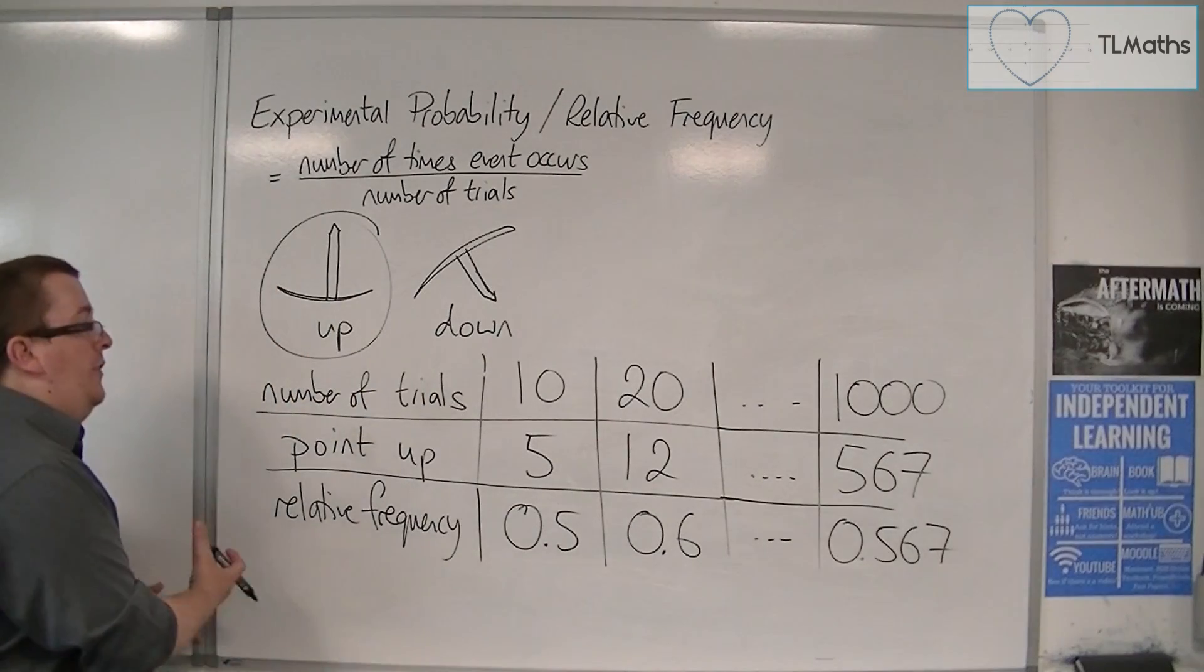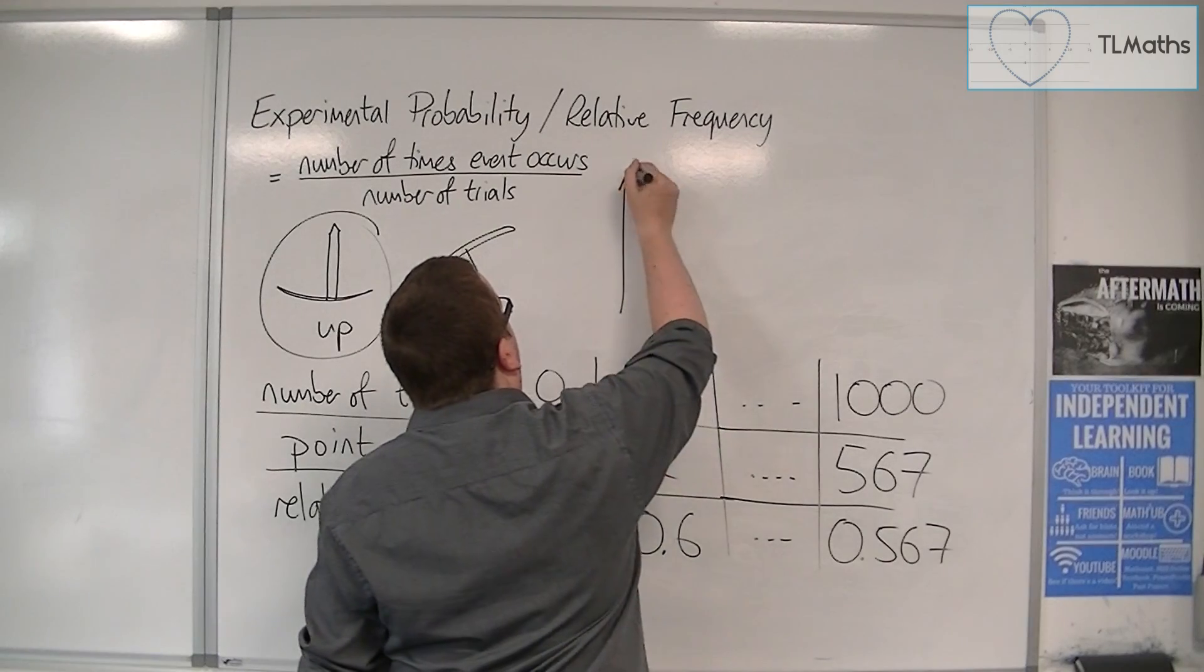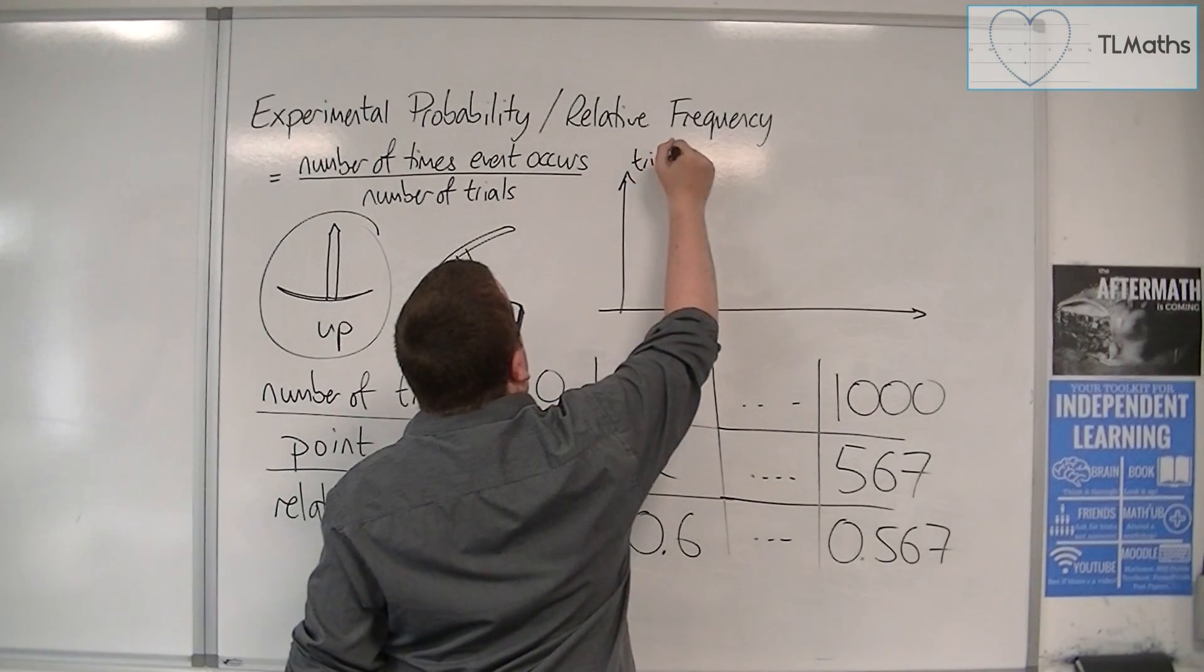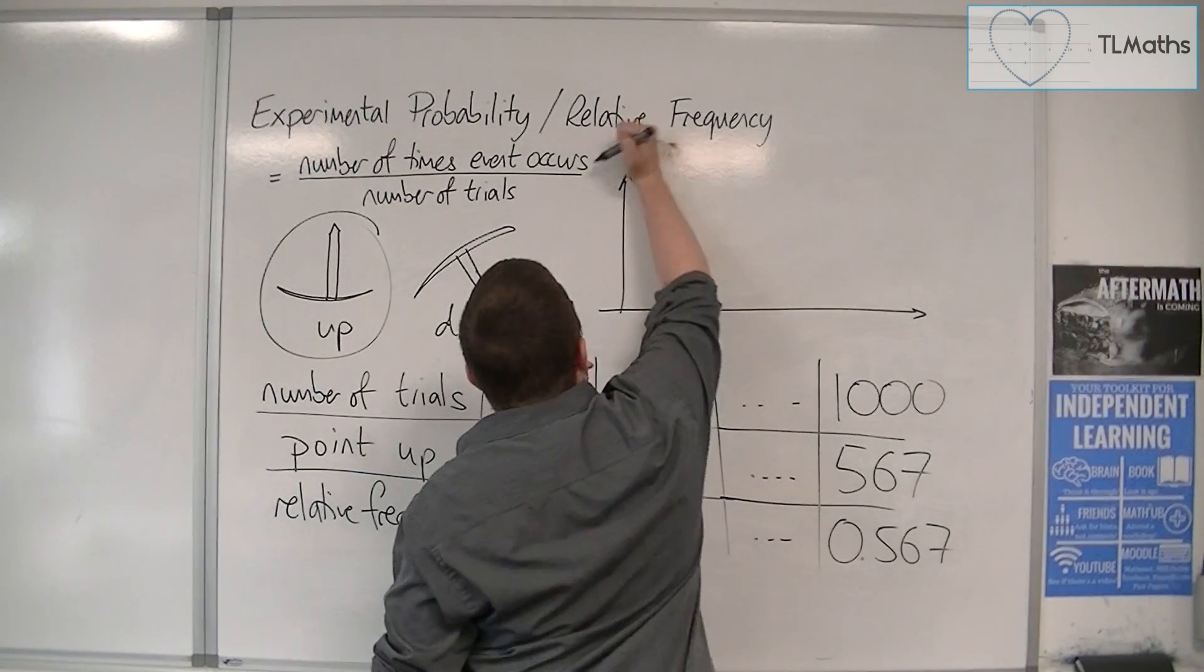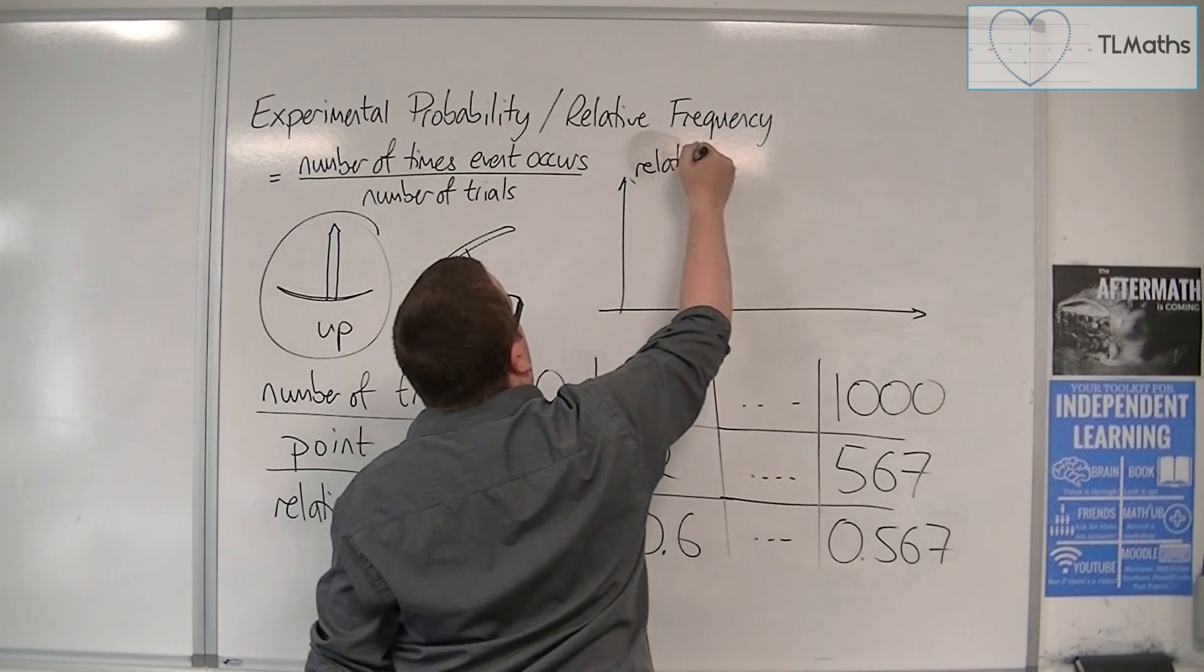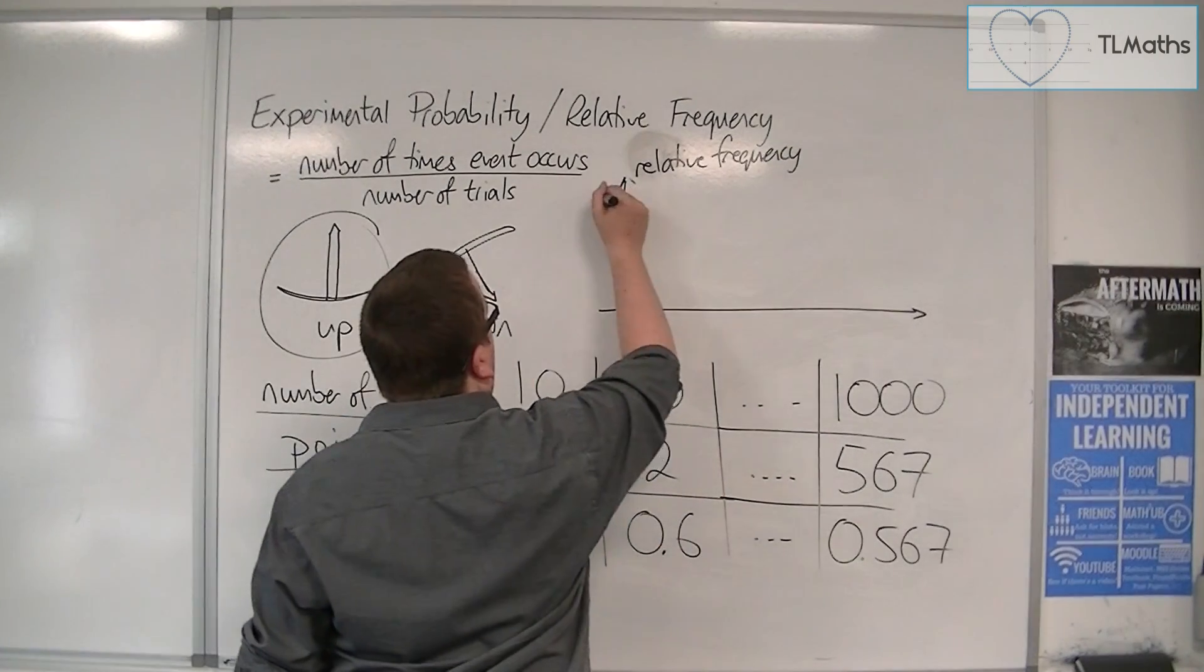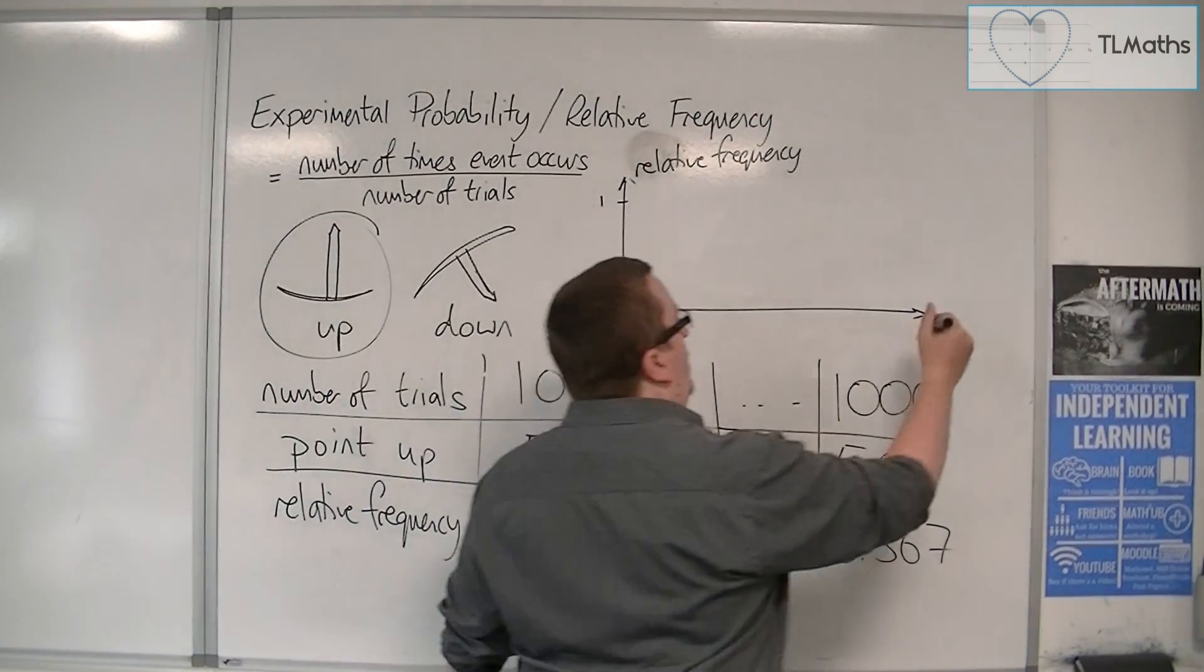And as this goes along, what I can do is I can record it in a table. So, I could have number of trials as the vertical axis. Oh, sorry, not number of trials as the vertical axis. Let me get this right. The relative frequency. This is the vertical axis, because I know that's going between 0 and 1. And the number of trials is the horizontal axis.